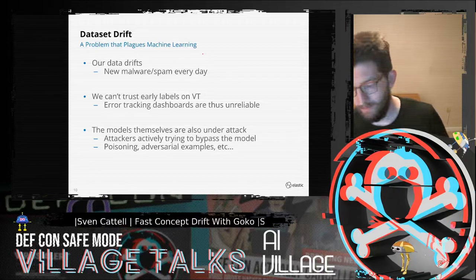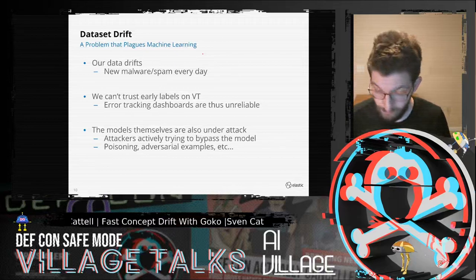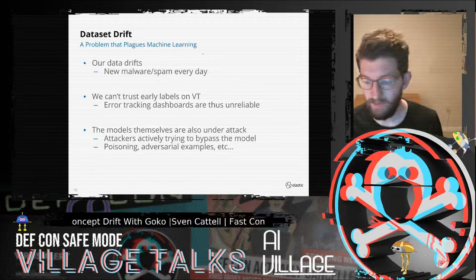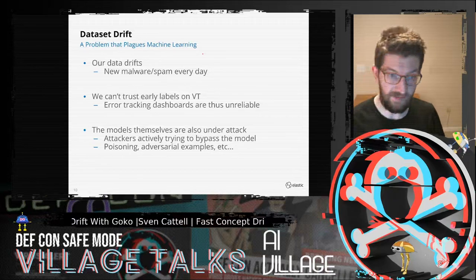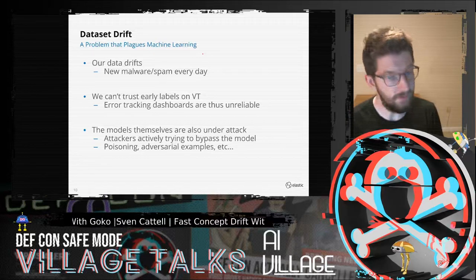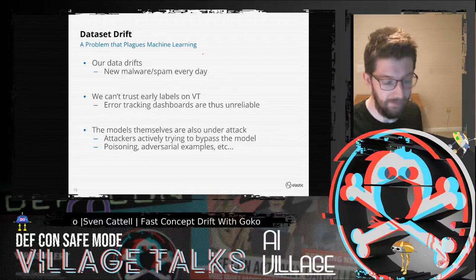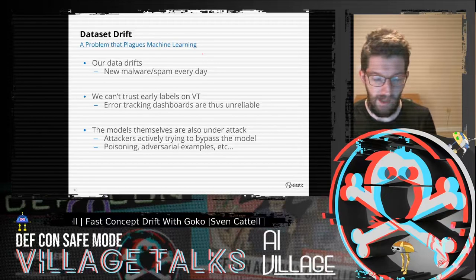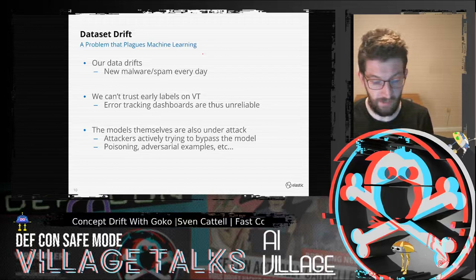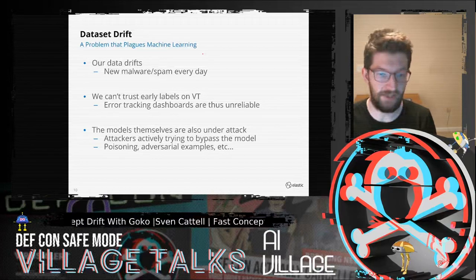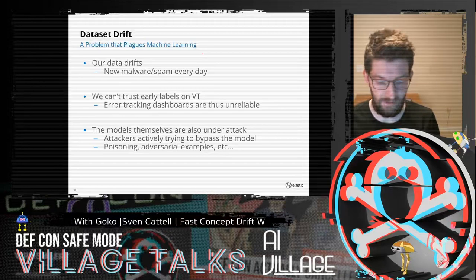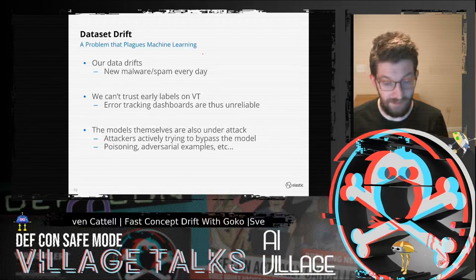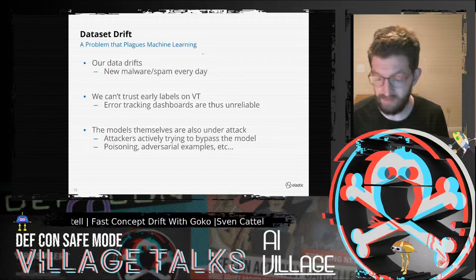Another problem is that these changes lower the efficacy of our deployed models. Our models expect data in sort of the same general location as our training data, and every time we deploy we are fixing our model's view of the world at a certain day. If it's trained in March, it might not work very well on data coming in at the end of April.